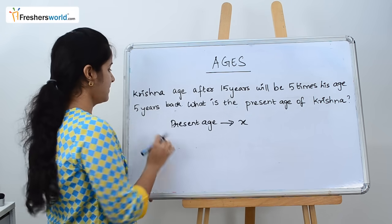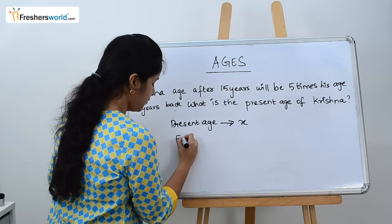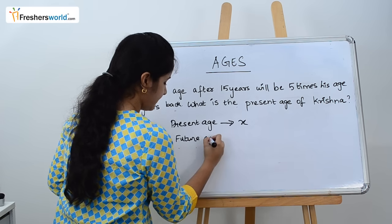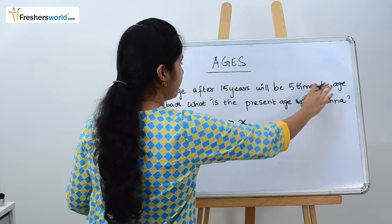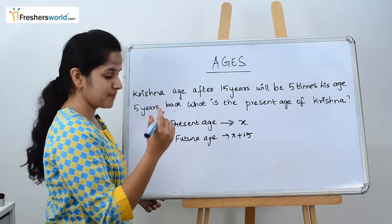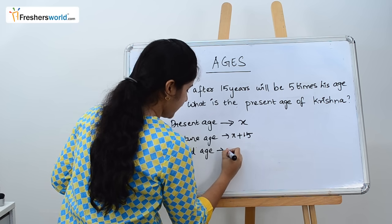Krishna's age after 15 years—the future age of Krishna is X plus 15—will be 5 times his age 5 years back. So old age is X minus 5.